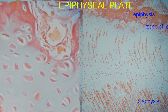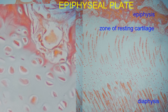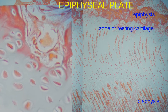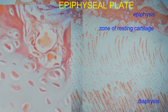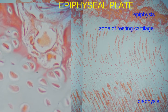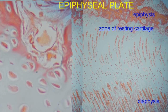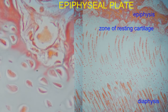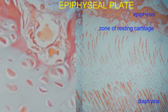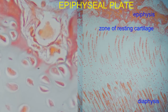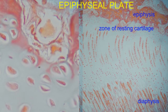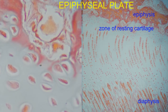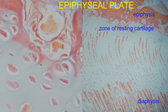There are four recognized zones in an epiphyseal plate. In the zone of resting cartilage, cartilage which lies adjacent to the bone in the epiphysis anchors the epiphyseal plate to this bony surface.